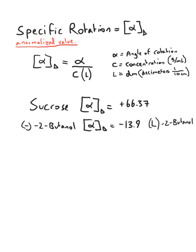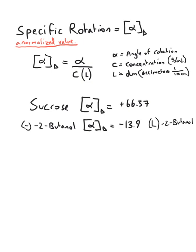Well, what would the specific rotation of the opposite enantiomers be? Well, it turns out it is the opposite. So a D-2-butanol would have a specific rotation of positive 13.9. This does not change.